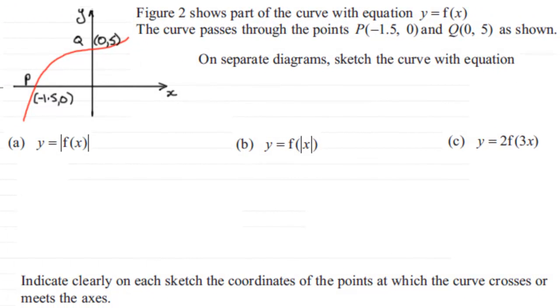Now we've got a question here which is all about transformations of graphs which you might like to try, or if you've had problems I've got the worked solutions anyway. So what are we given? We're given in this figure, figure 2, part of the curve with equation y equals f of X, and the curve passes through the points P with coordinates (-1.5, 0)